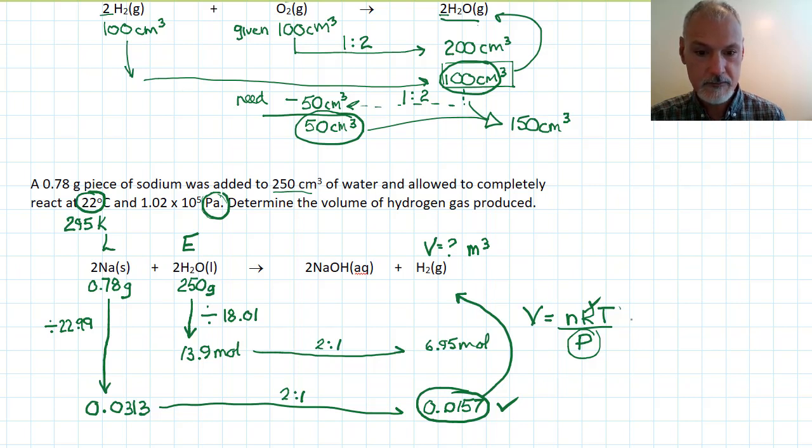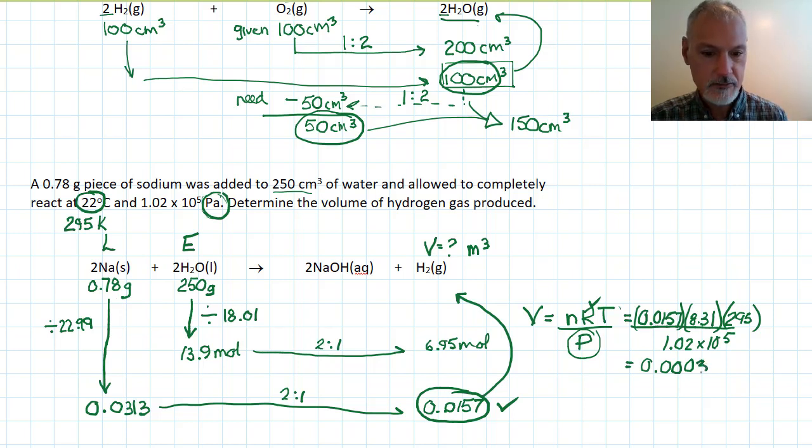So let's put the values in then for what we have here. So our number of moles, 0.0157. Gas constant, 8.31. Temperature, 295. And finally, our pressure, 1.02 times 10 to the 5 pascals. Substituting and solving, you should get 0.000. Two significant digits in my mass, so ultimately, two significant digits in my answer. And as I mentioned earlier, that will be in cubic meters because my pressure was in pascals.